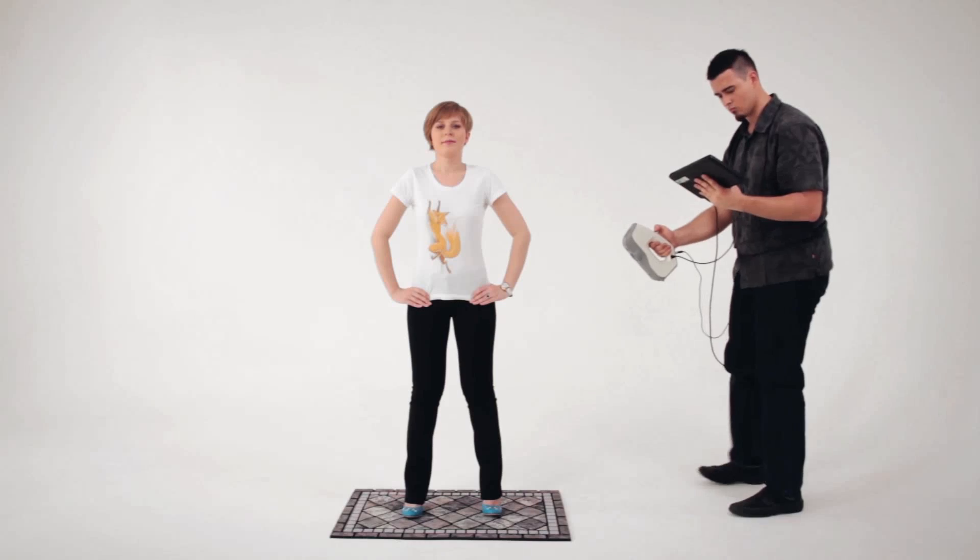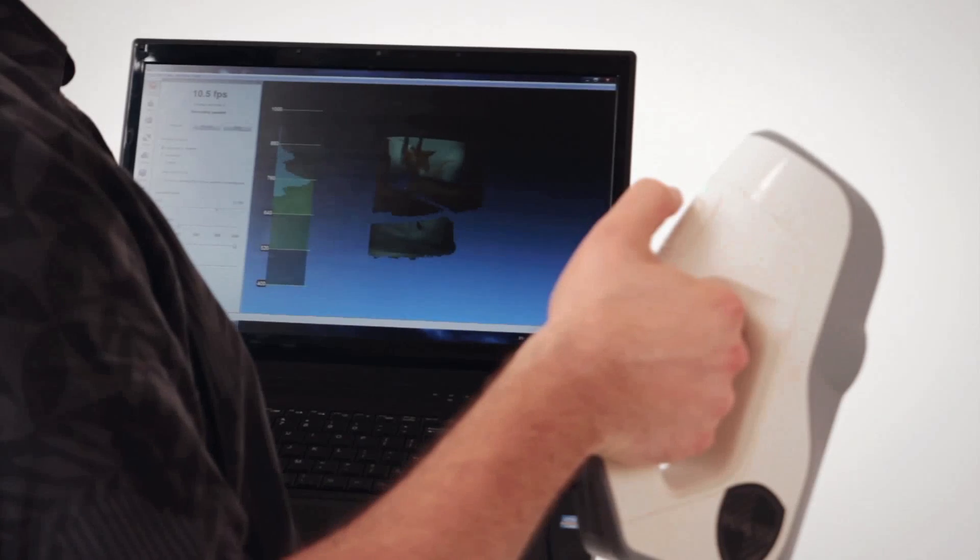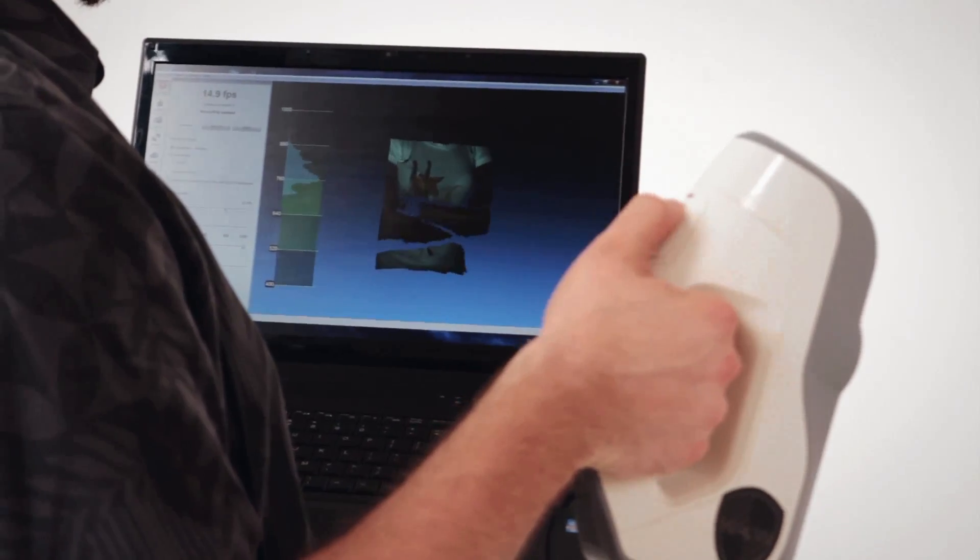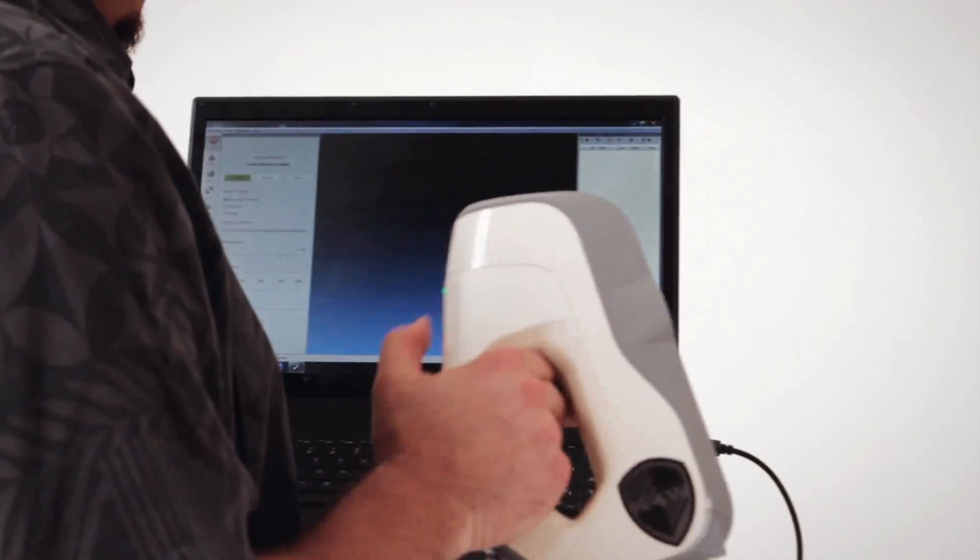After you finish scanning, ask the person you scanned to hold his or her pose for a minute more in case you missed an area during scanning. Open the scan you made, and ensure that it does not have any holes. If there are any holes, re-scan the area in question.